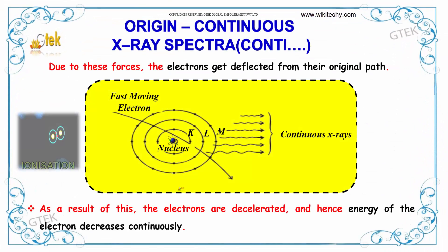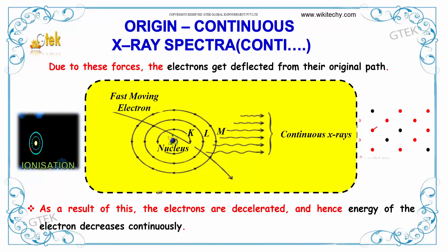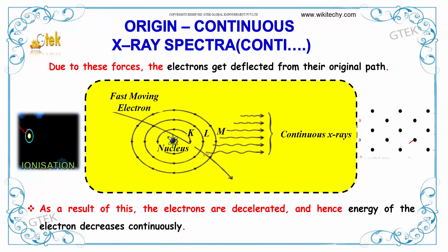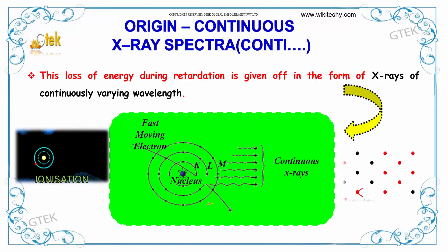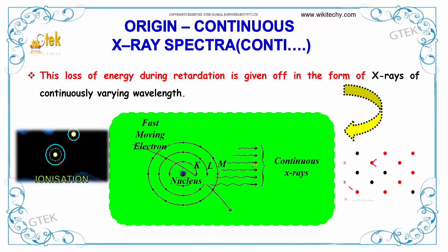Due to this force, the electrons get deflected from their original path. As a result, the electrons are decelerated and hence the energy of the electron decreases continuously. This loss of energy during retardation is given off in the form of X-rays of varying wavelengths. That's how your continuous X-ray spectra is formed.